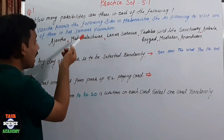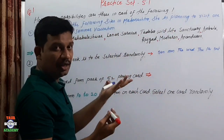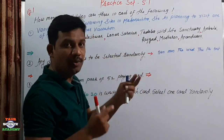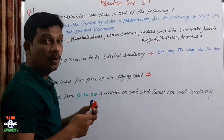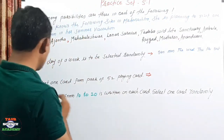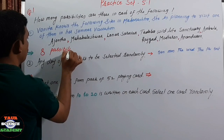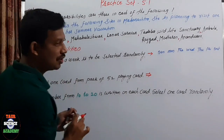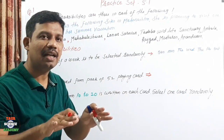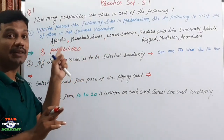She can visit Ajanta, Marble Shore, Lonar Sarovar, Tadoba Wildlife Sanctuary, Amboli, Rajgad, Matheran, or Anandvan. So how many possibilities are there? Eight places are there, which means there are 8 possibilities. We know which places she could go to, but we don't know which one she will actually choose. So there are 8 possibilities.